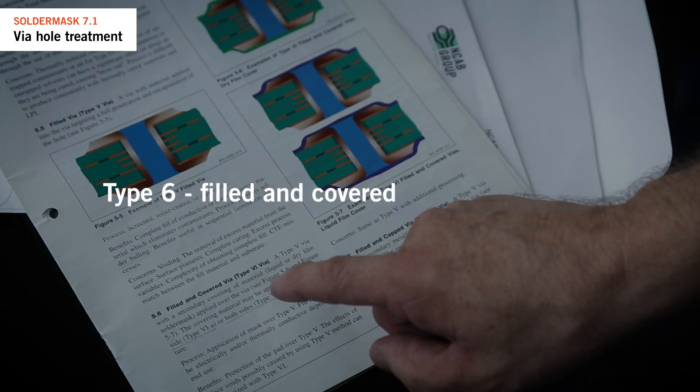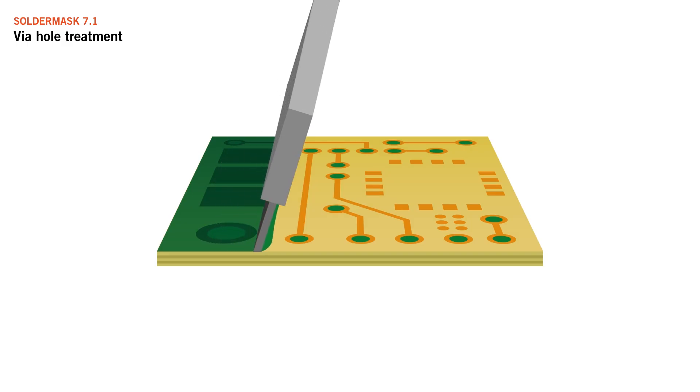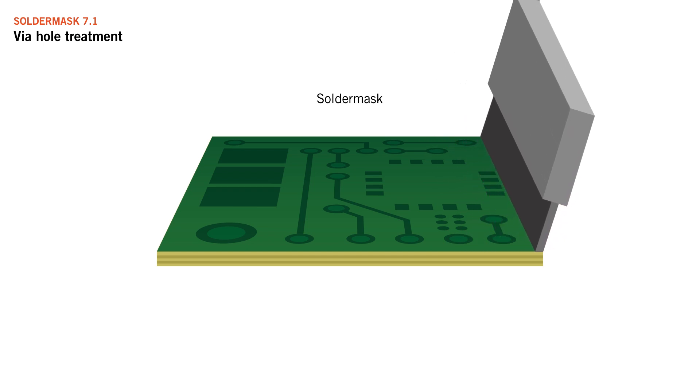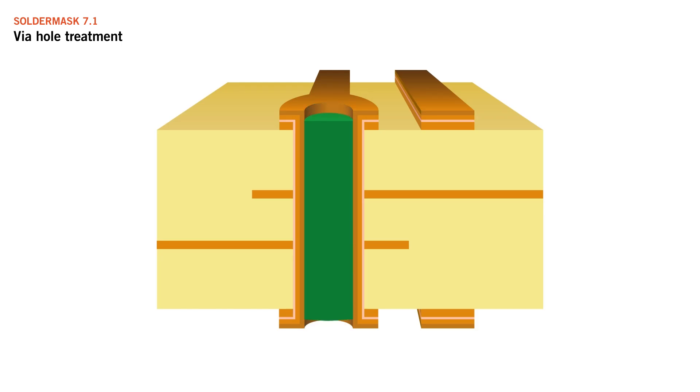This involves filling the holes from one side, followed by an application of solder mask to cover the surface of the circuit board, including the plugged holes. We choose type 6 because it ensures good solder mask fill.